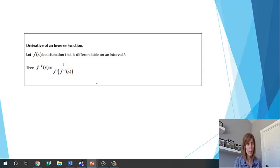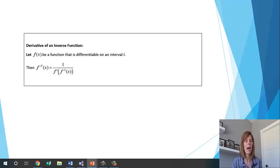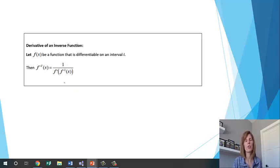What we're going to use this for — very popular in calculus — is to find the derivative of an inverse. We don't have to have an equation for the inverse function; we can still find its derivative. The formula is: the derivative of f inverse of x equals 1 over f prime of f inverse of x. As long as we use this formula, we'll be able to find the derivative of an inverse without actually finding the inverse.